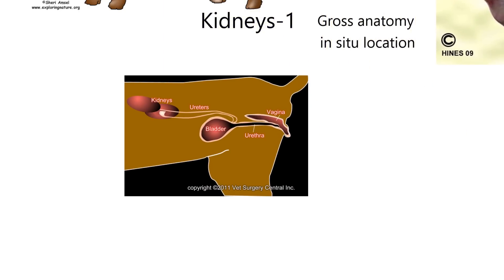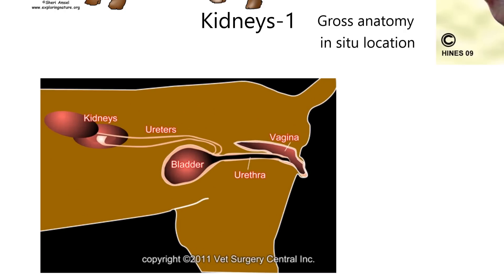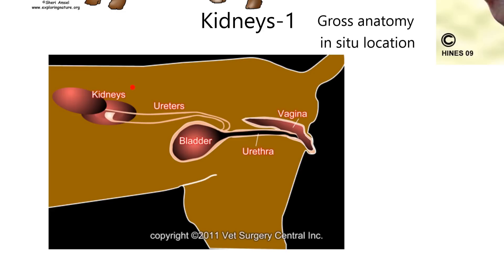Here's another diagram — the more diagrams, the better. We're showing that there are two kidneys in the lumbar region. This diagram is good because this is cranial, and notice the kidneys are not exactly side by side — there's usually one more cranial than the other. Here's the right spelling for ureter; there are two of them, and they go to the bladder. The ureters connect closer to the neck of the bladder. This is a female dog, so the urethra ends up coming into the ventral aspect of the vagina.